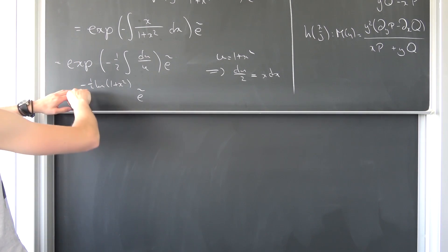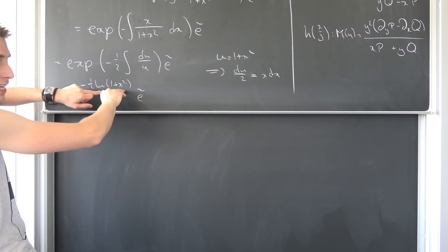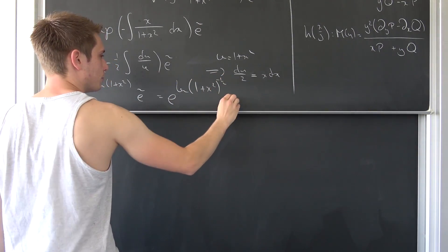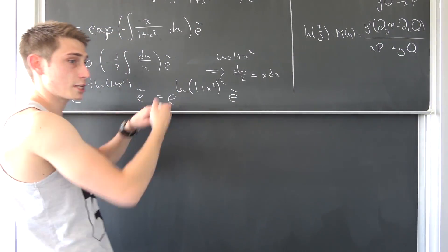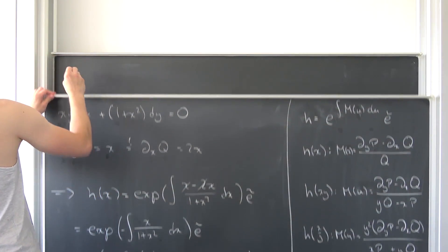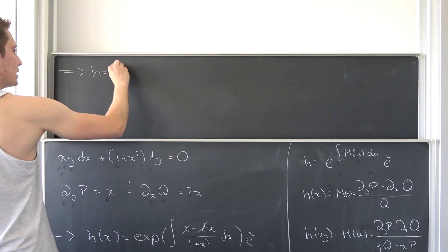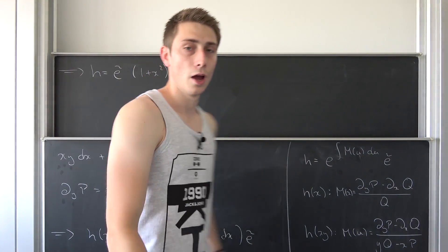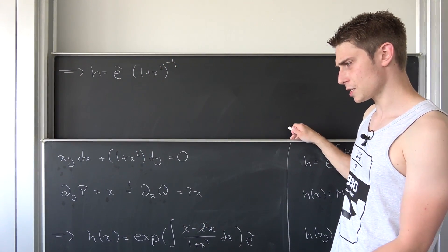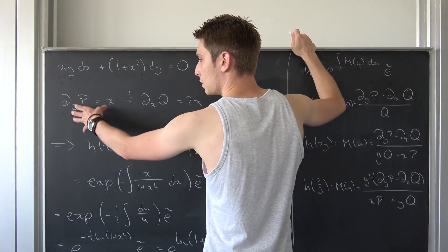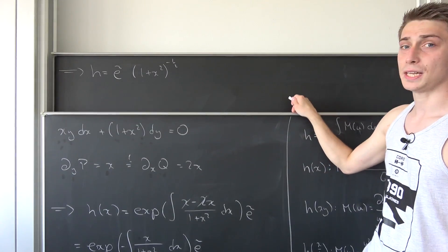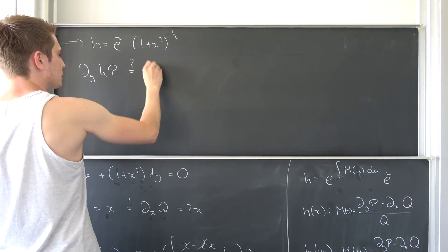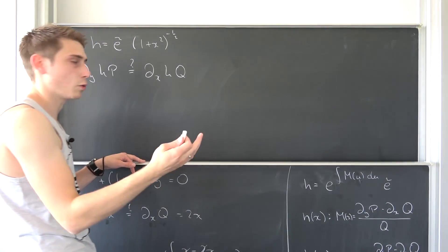We can do some simplification: −(1/2)·ln(1 + x²) is nothing but the natural log of (1 + x²) to the negative one-half power. So e to the natural log of something is just that something itself, leaving us overall with h being nothing but (1 + x²)^(−1/2) times the arbitrary constant. This is our integrating factor which is going to make this differential equation exact.